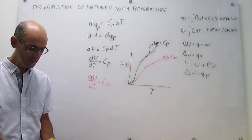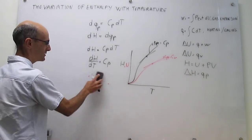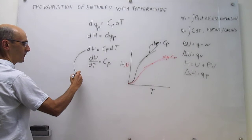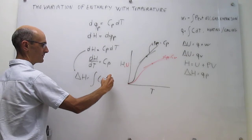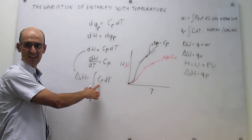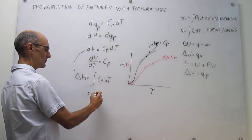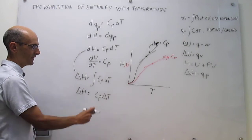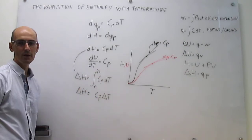In problems we are going to need an explicit dependence of the enthalpy on temperature, and that can be done via simple integration: delta H equals the integral of Cp dT. There are two cases. One in which the heat capacity is constant — just a number that does not depend on temperature — in which case the expression simplifies to Cp times delta T. The other case is one in which the heat capacity depends on temperature, so you will have to evaluate the integral from T1 to T2 analytically.